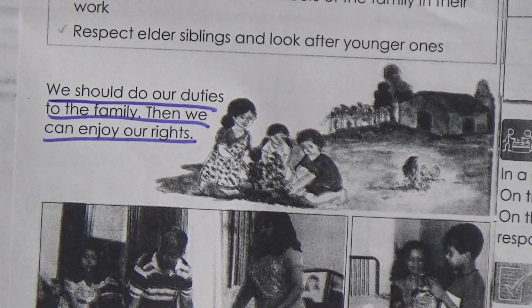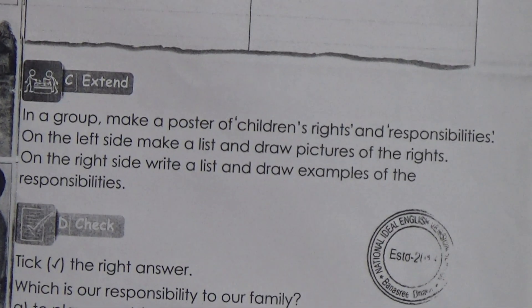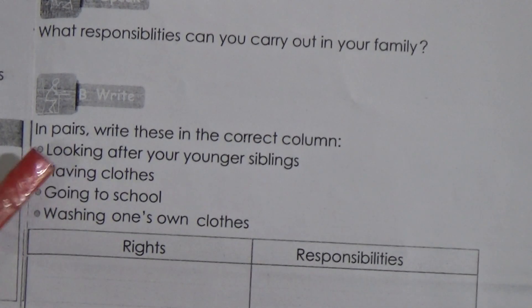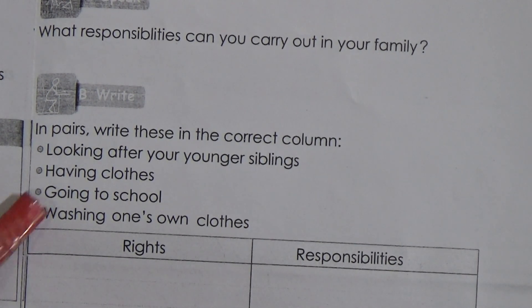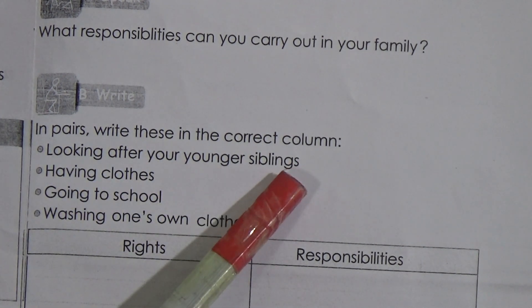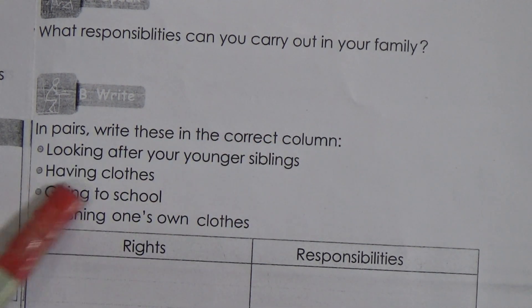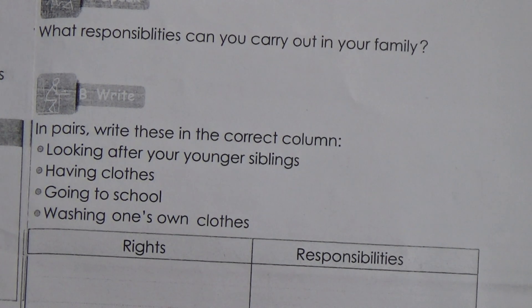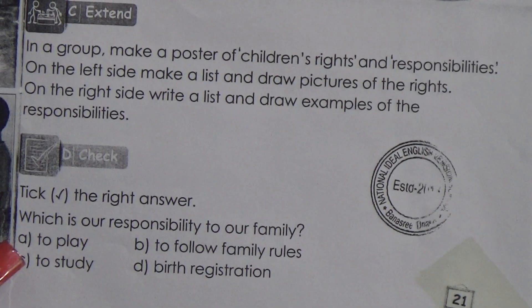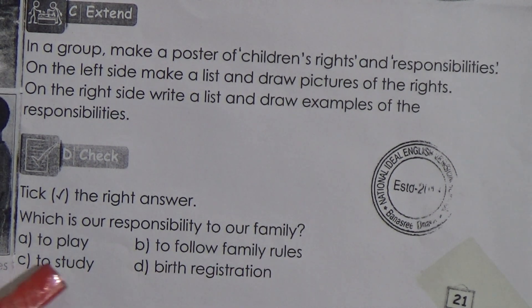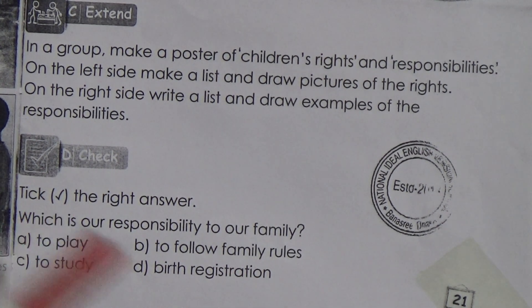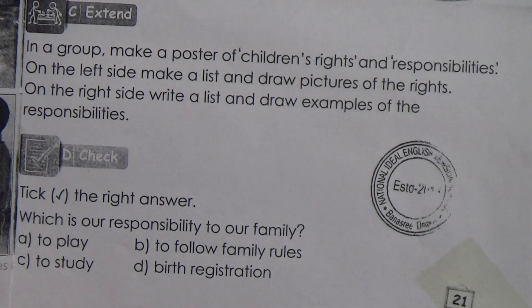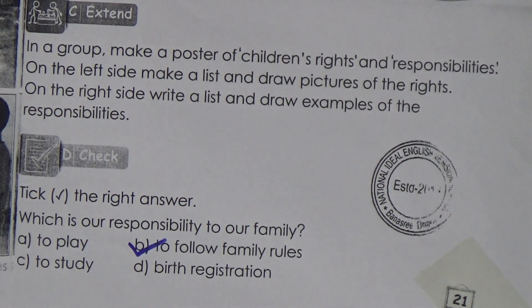Now for Section B: in pairs, write these phrases in the correct column — Rights or Responsibilities. Looking after your younger siblings is a responsibility. Having clothes is a right. Going to school is a right. Washing one's own clothes is a responsibility. For Section D: tick the right answer — which is our responsibility to our family? Option A: to play. Option B: to follow family rules. Option C: to study. Option D: birth registration. The answer is option B — to follow family rules.